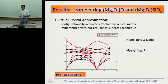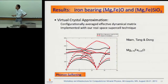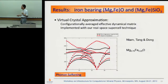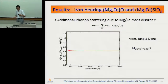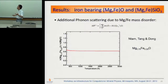The next stage is to put iron into the system. What we do here is use a virtual crystal approximation. I'm running out of time so I'll give just a brief idea. This is a simple test to show that the virtual crystal approximation works — there's no LDA+U here. It's just a test to show that with a spin-polarized calculation we can do the virtual crystal correctly. We also want to account for the additional phonon scattering from the iron-magnesium disorder, because now we have a solid solution, not a pure crystal.